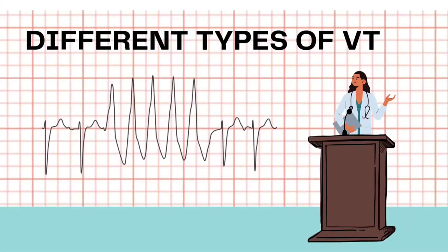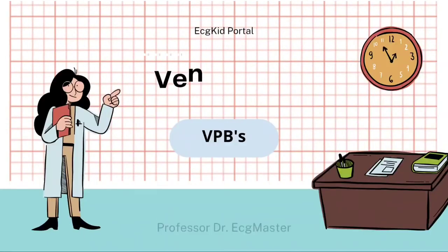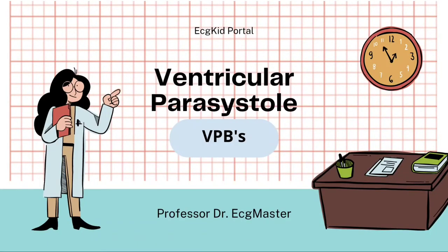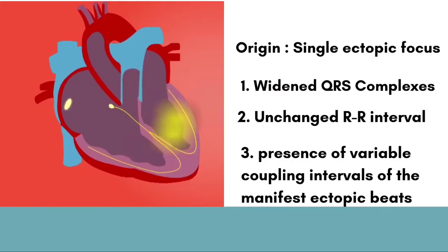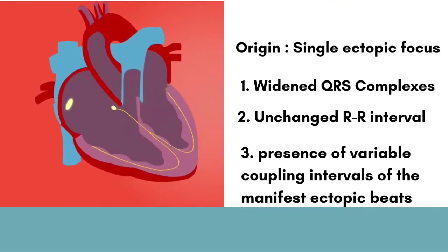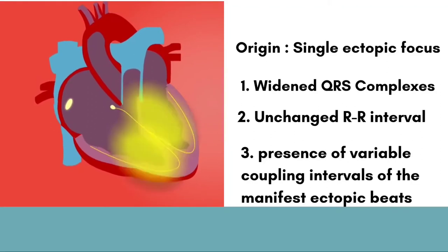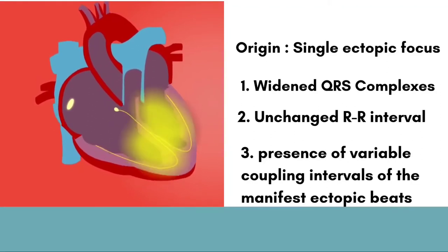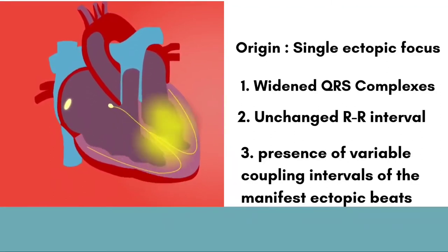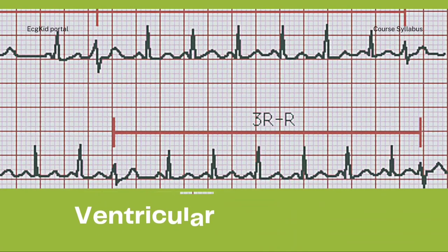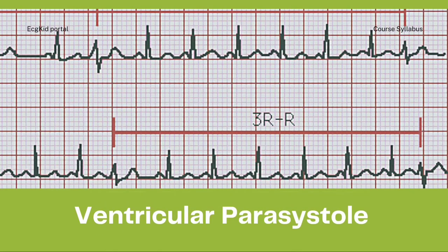Here we are going to discuss some of the ventricular rhythms seen in clinical practice. Ventricular parasystole is an independent automatic ventricular rhythm that emerges from a single ventricular focus, characterized by a widened QRS complex with regular discharge and ventricular depolarization. Because the rhythm is independent and not suppressible, ventricular parasystole is characterized by varying coupling intervals and unchanged R-R intervals.